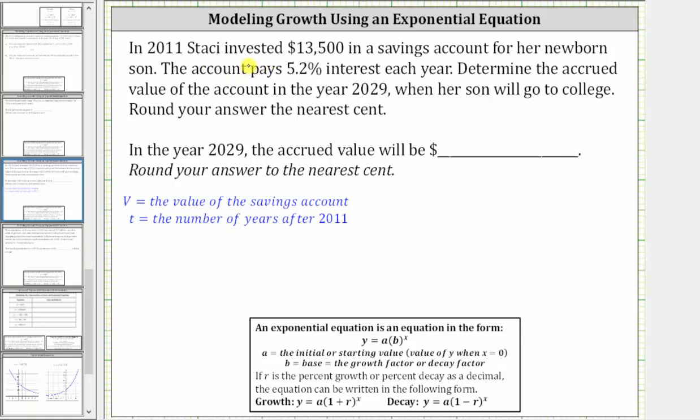In 2011, Stacy invested $13,500 in a savings account for her newborn son. The account pays 5.2% interest each year. Determine the accrued value of the account in the year 2029 when her son will go to college. Round your answer to the nearest cent.